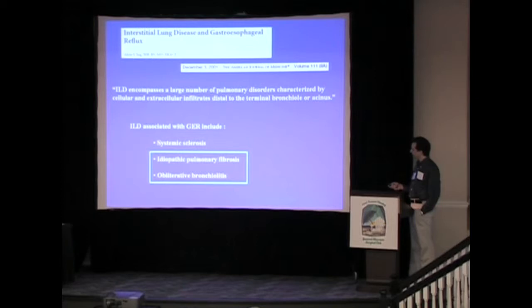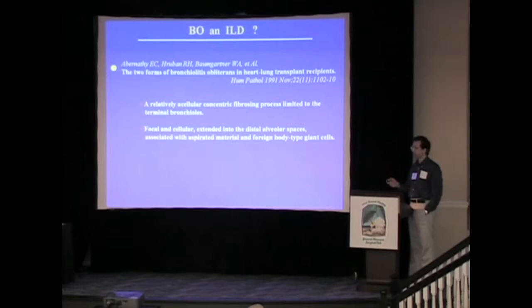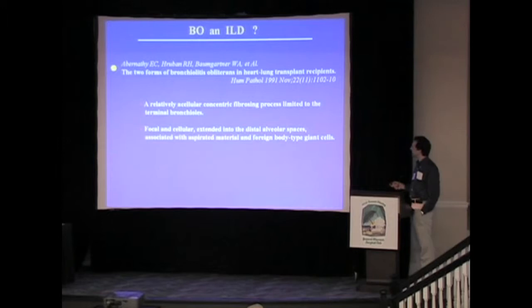Differently, for IPF and bronchiolitis obliterans — if you discuss the classification of OB within ILD with pulmonologists, they'll likely say it's not an ILD. But Dr. Abernathy in 1991 described two forms of bronchiolitis obliterans in heart-lung transplant recipients: one a relatively acellular concentric fibrosing process limited to the terminal bronchioles, and one associated with focal cellular infiltration extending into the distal alveolar space with aspirated material and foreign body giant cells, which would fit the ILD classification.